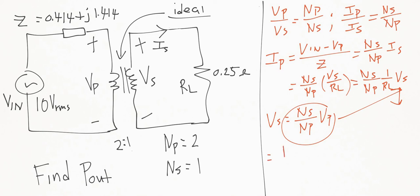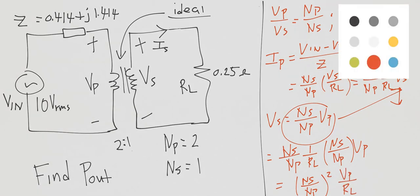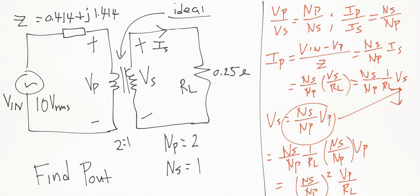Substituting in, we get (Ns/Np) times (1/RL) times (Ns/Np) times Vp. Grouping those terms, this simplifies to (Ns/Np)² times Vp over RL. So we now have two expressions that are equal to each other, and we can use that to solve for Vp.